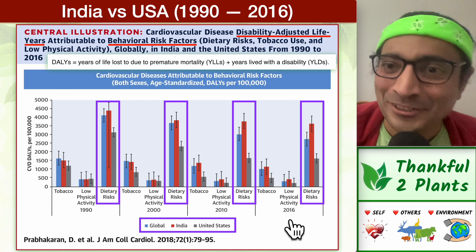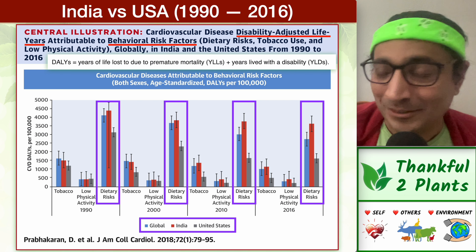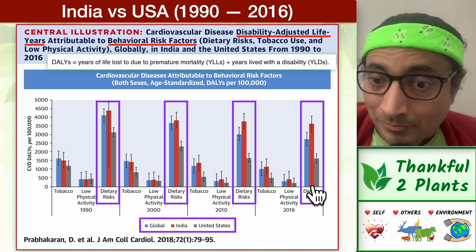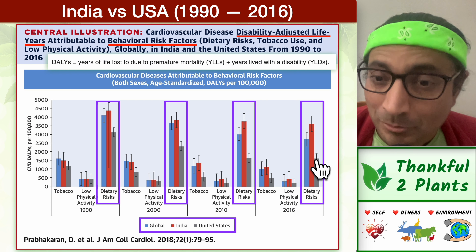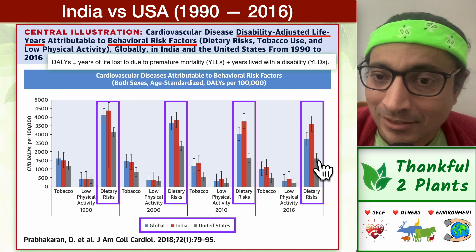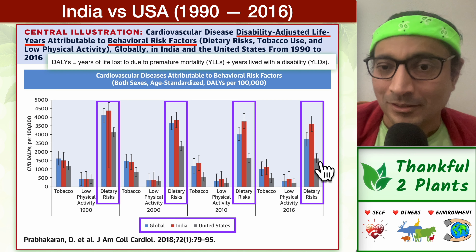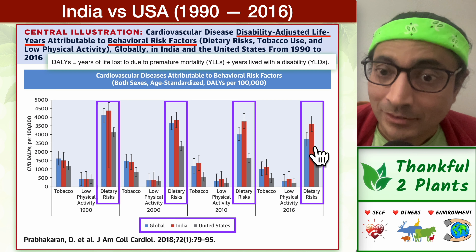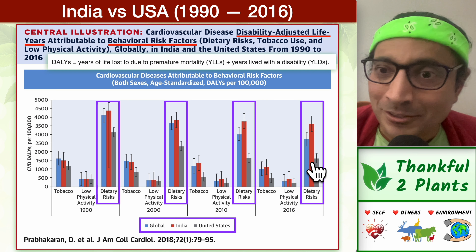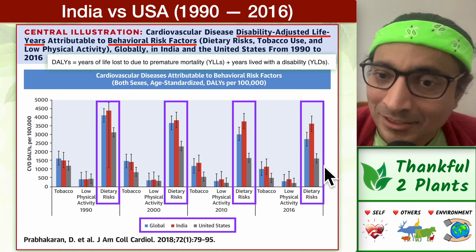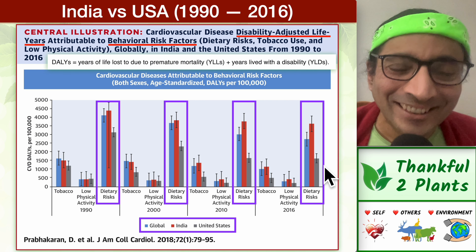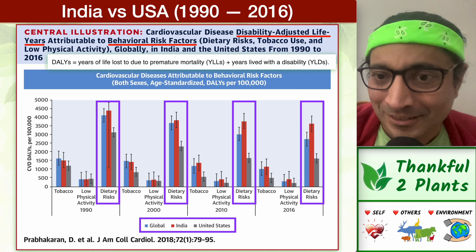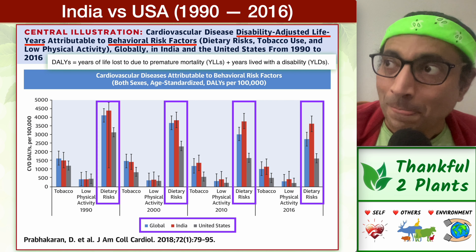Something amazing is going on — I was very surprised, and I hope you are too. Look at these red bars — they are almost twice as big as the gray bars. My interpretation is that the cardiovascular disease risk due to diet in India is two times that of the USA. I was originally from India but have spent several decades in the USA.